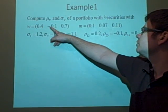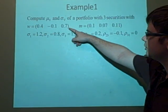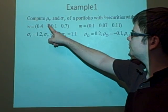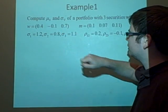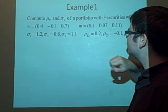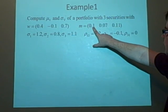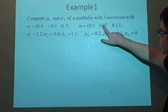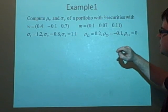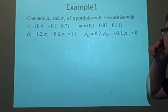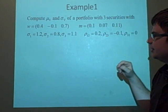We want to compute the expected return and the standard deviation of a portfolio with three securities, so we're using the vector notation. It's got these weights: 40%, minus 10%, and 70%, and this does add up to one, so that's fine.